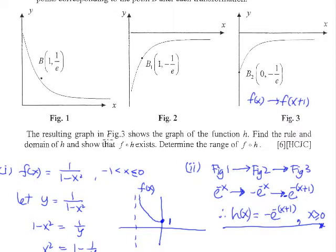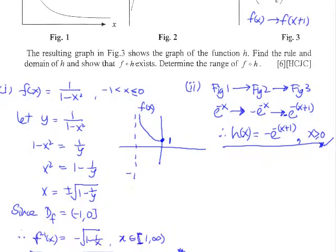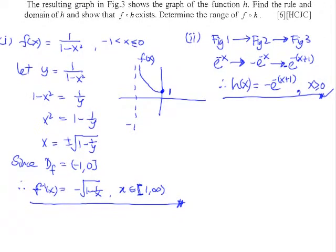The domain is from 0 to infinity, so x is greater than or equal to 0, which is given to us. So this is our h(x). Let's move on to the last part: find the rule and the domain of h — done, we got it. And show that f of h exists.